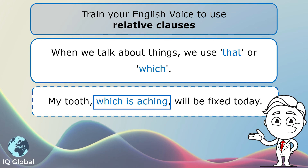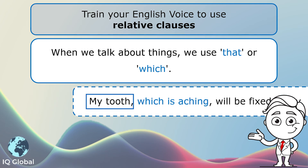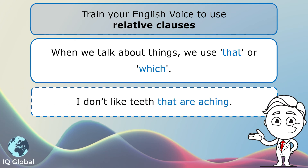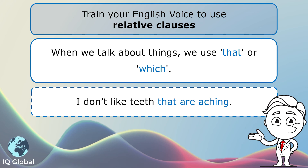And this is the relative clause. It is giving us more information about the noun, about the tooth. Sentence two: I don't like teeth that are aching. Here, we are talking about teeth — that is the noun — and we can use the word that in that sentence. And this is a relative clause.